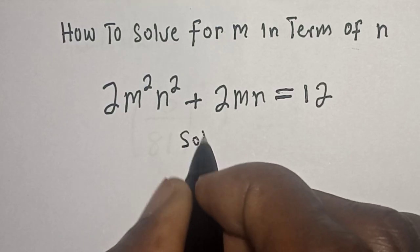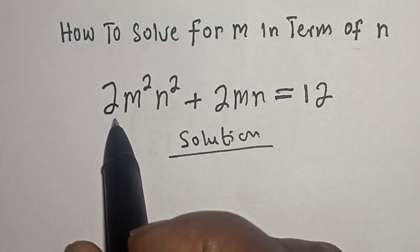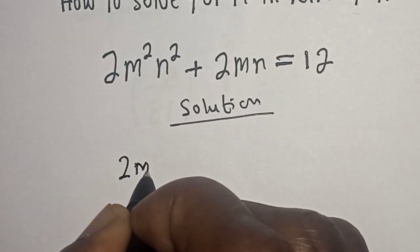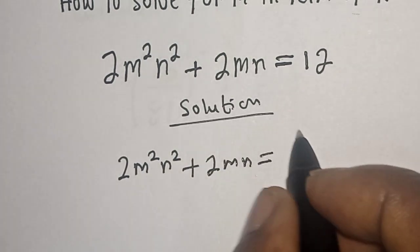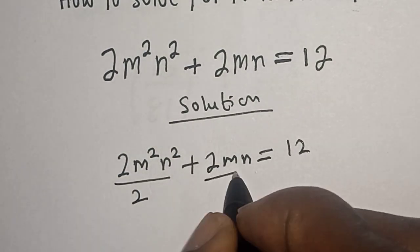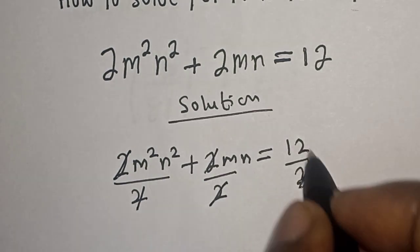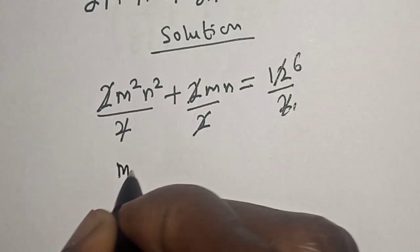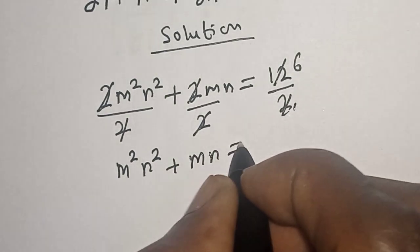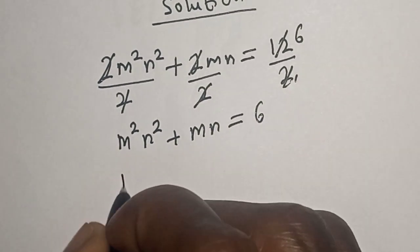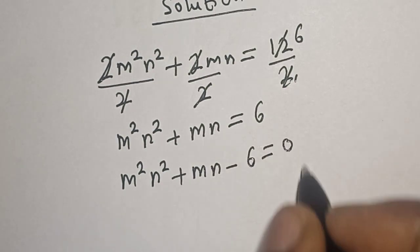Solution: the equation says we should solve for m in terms of n. What we do first is divide all through by 2. So 2m²n² + 2mn = 12, divided by 2 throughout. This gives us m²n² + mn = 6, and rearranging: m²n² + mn - 6 = 0.